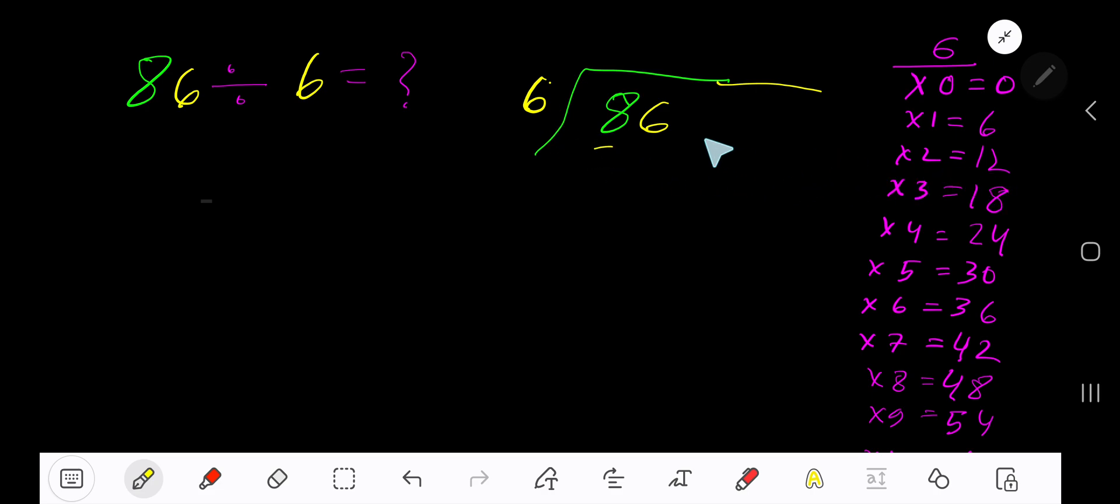We have to consider 1 times 6 is 6. Subtract, then bring down the next digit. This is 26. 6 goes into 26 how many times? 5 times is 30 which is greater, so 4 times.